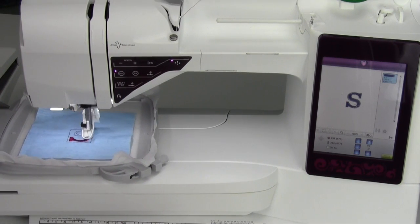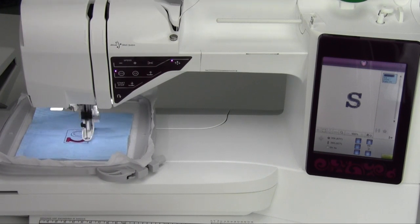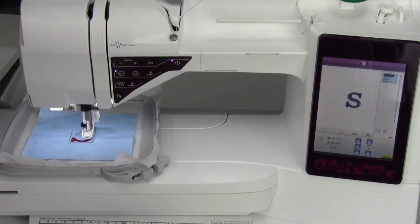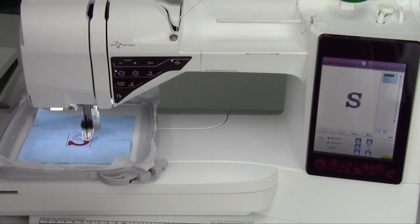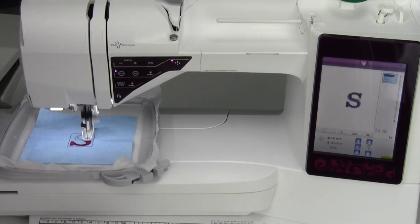If you're working with sweatshirts, so you don't want to hoop up the sweatshirt or something, just make sure you're always using the two layers of cutaway stabilizer, and that really does the job, too.